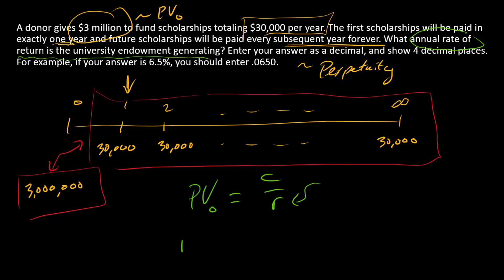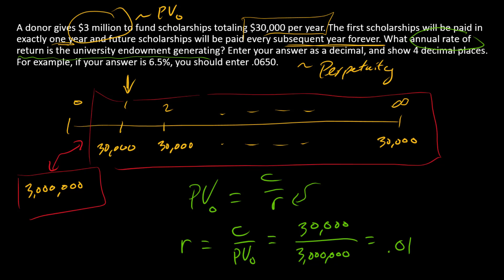We can find R — let's just solve for it. R is equal to C over PV: divide $30,000 by $3 million. That is 0.0100 — 1%. 1% is the annual rate of return that this endowment is generating.